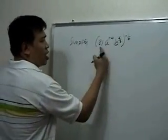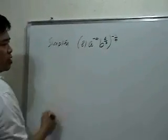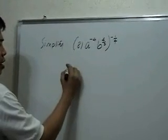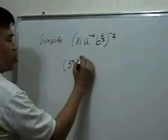First, we have 81 raised to the negative 1 fourth. I will look for the prime factors of 81 and write 81 as 3 to the 4 raised to the negative 1 fourth.